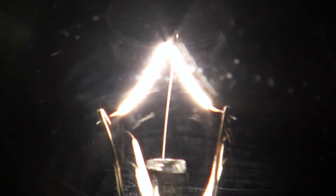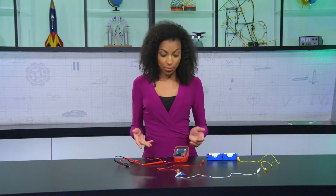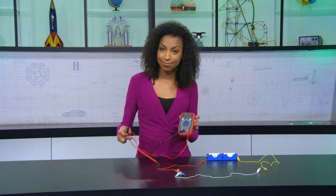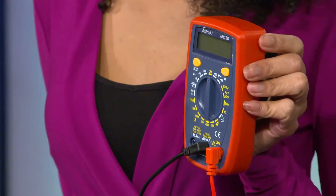It may seem simple now, but it was a breakthrough. Today we can measure voltage, current, and resistance with a multimeter.